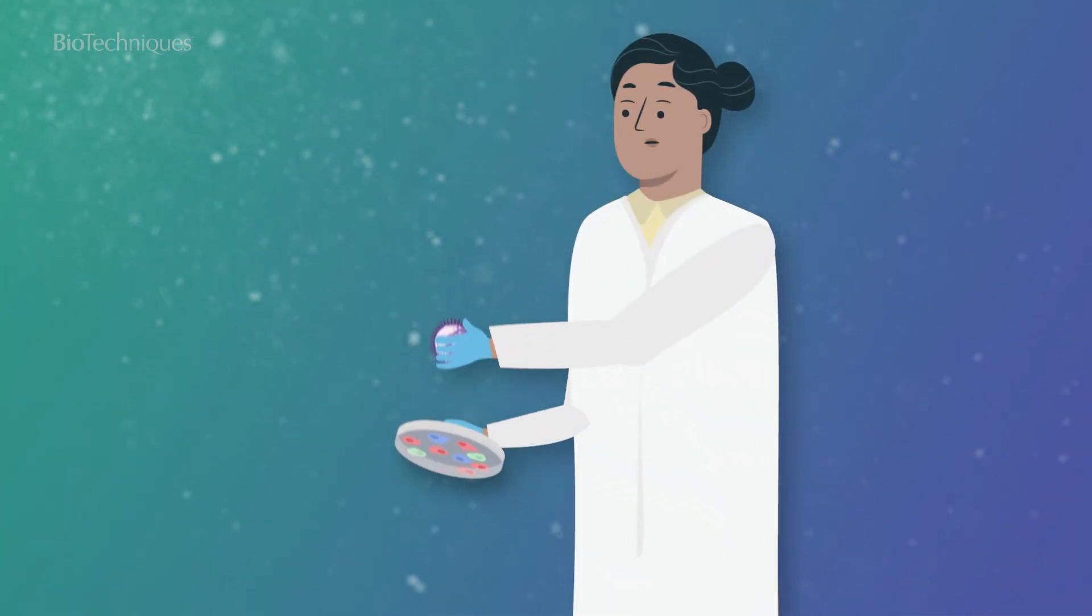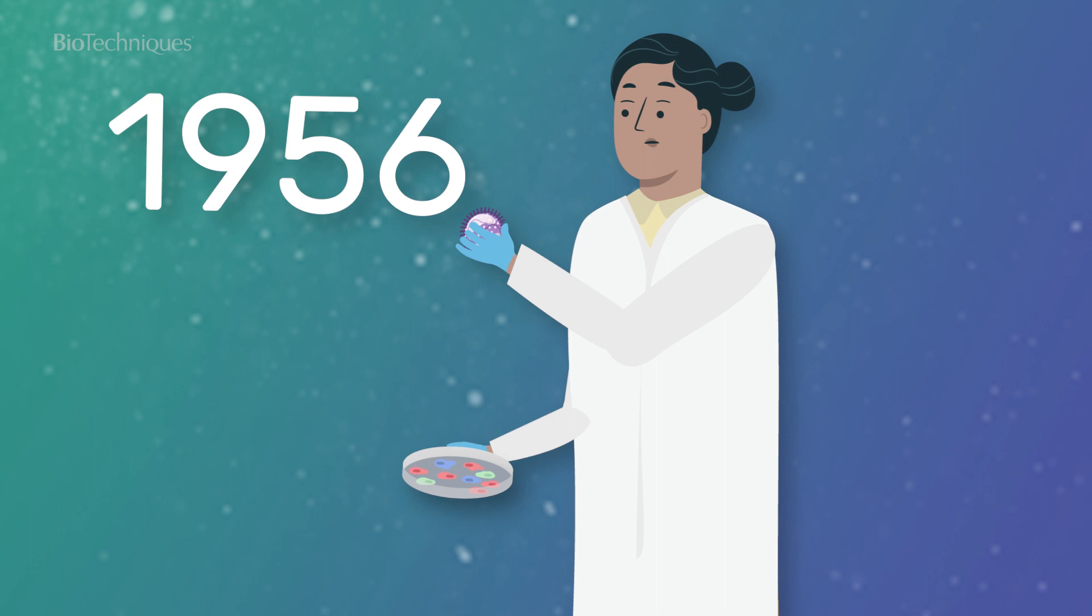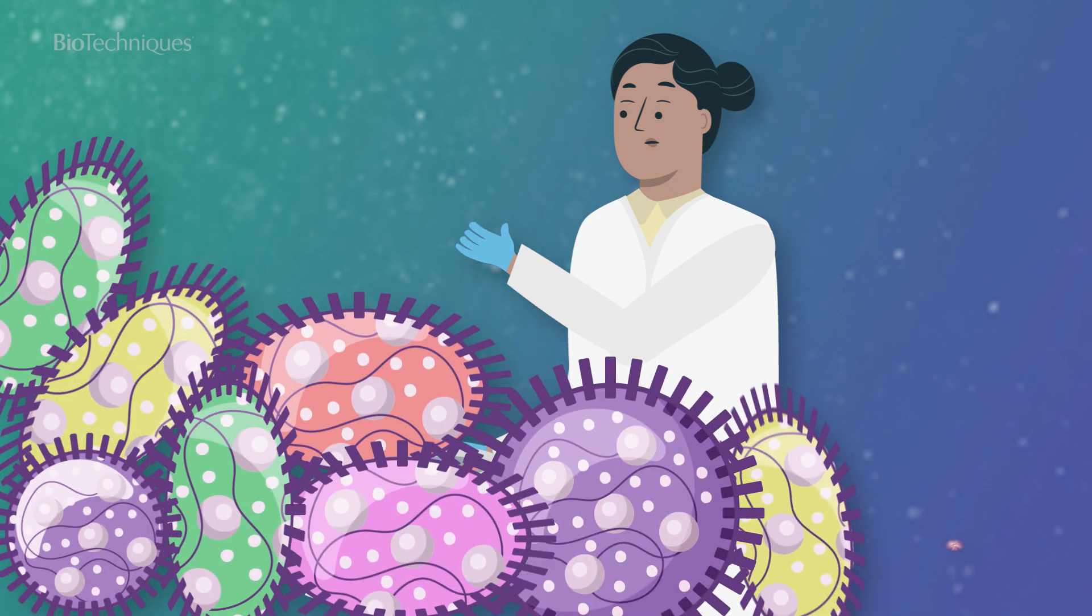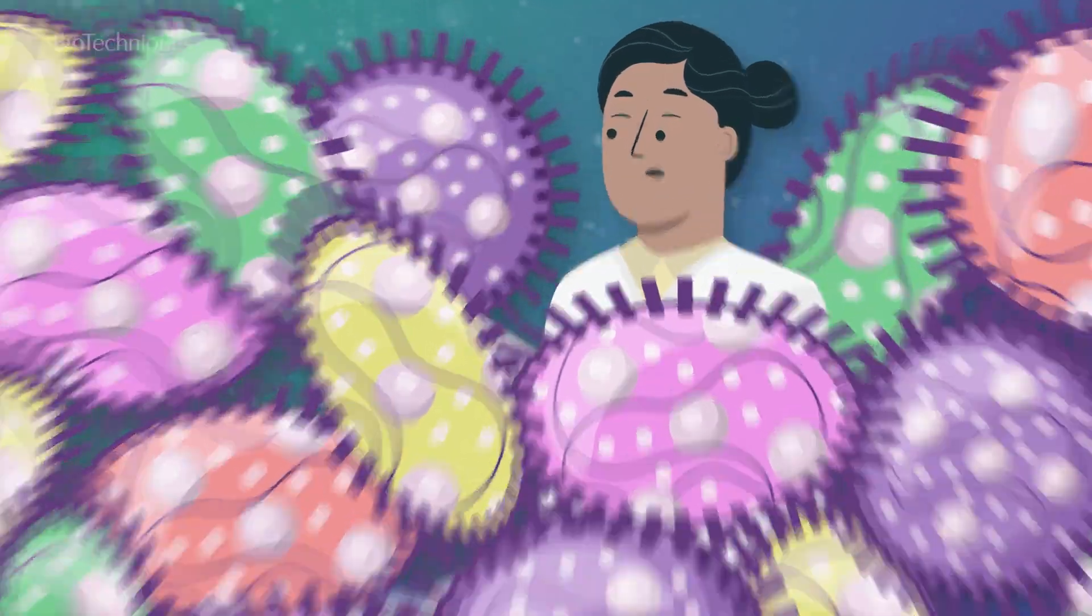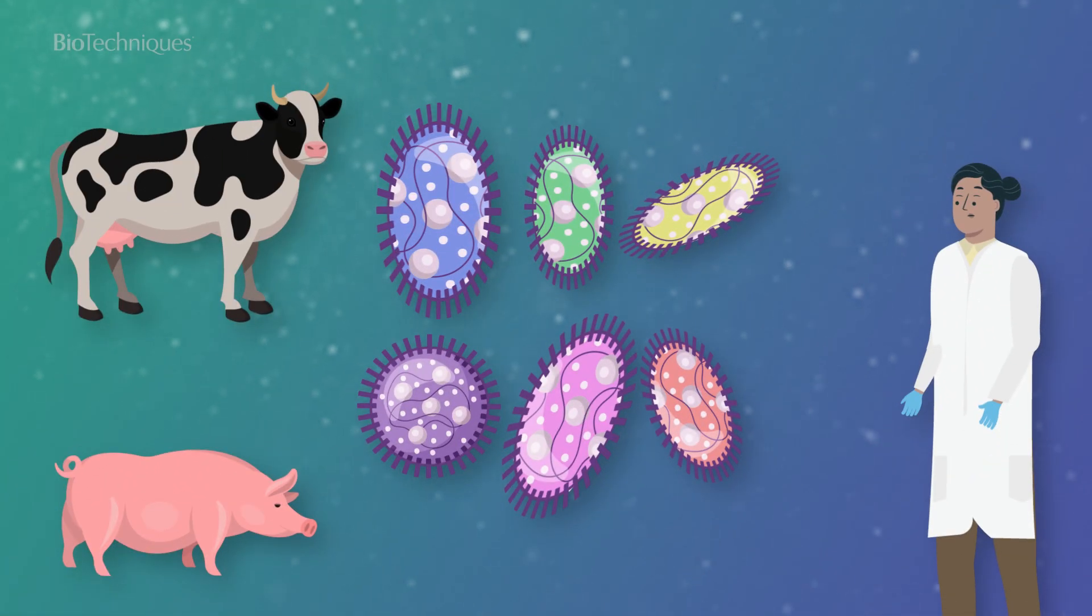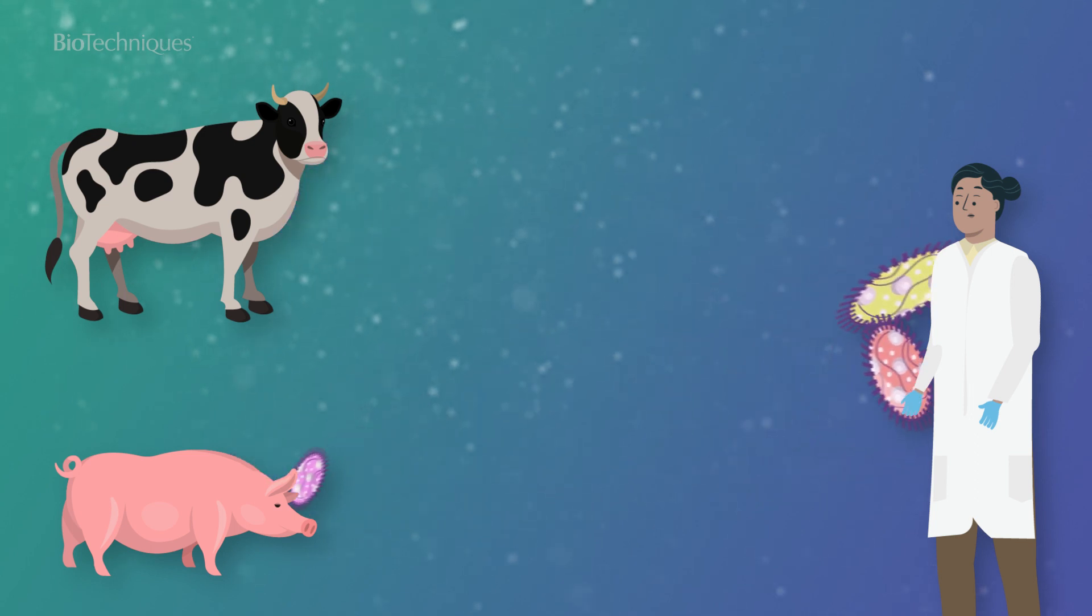Mycoplasmas were first isolated from cell cultures in 1956, and since then, over 180 mycoplasma species have been identified. However, 95% of cell culture contamination is due to just six species originating from human, bovine and swine.